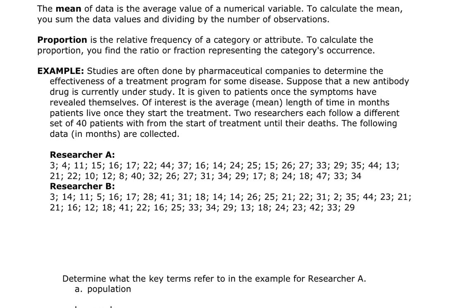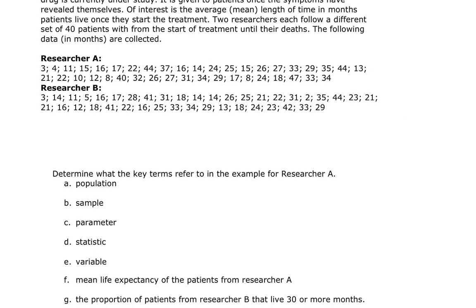Here's our last example: a study by a pharmaceutical company to determine the effectiveness of a treatment for a disease. A new antibody drug is given to patients once symptoms reveal themselves. Of interest is the average mean length of time in months patients live after starting treatment. Two researchers each follow a different set of 40 patients from the start of treatment to their deaths, and the data collected is in months. It's going to ask us to identify the population, sample, parameter, statistic, variable, mean life expectancy for researcher A, and the proportion of patients from researcher B that live 30 months or longer.